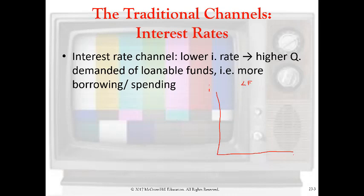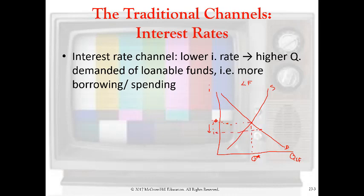We have the interest rate as the price, we have a quantity of loanable funds per time period, a downward sloping demand curve and an upward sloping supply curve. Here's this level of interest rates — let's call it I-star equilibrium — and quantity, let's call it Q-star. And the Fed undertakes some expansionary monetary policy with an eye on pushing the interest rate target down to I2, which is going to push us out on the demand curve to Q2. We've got an increase in lending and borrowing, and if that happens, of course, an increase in spending, holding everything else constant.